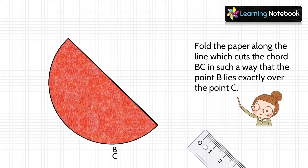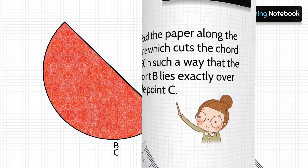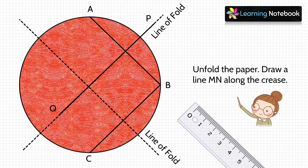Next, fold the circle again so that point B lies exactly over point C. Unfold the circle — this new dotted line is the line of fold. Draw a line MN along the crease as shown.